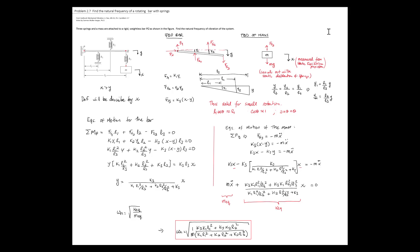In conclusion, we solved this problem by drawing free body diagrams, finding spring forces from deflections at each attachment point, writing the bar's equation of motion by taking moments at the pivot, finding a relation between Y and X, then writing the equations of motion for the mass and substituting Y. From the resulting equation of motion, we identified the equivalent spring constant and equivalent mass, and computed the natural frequency of the system.